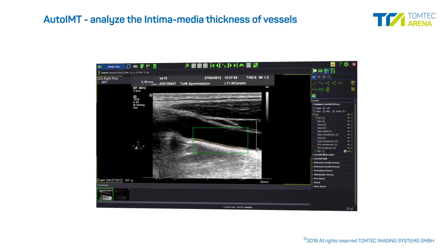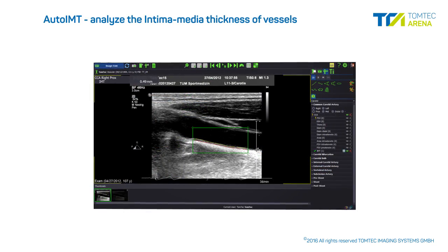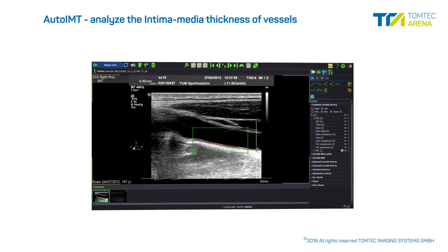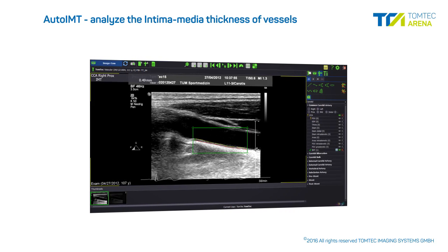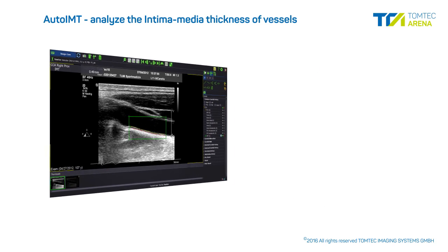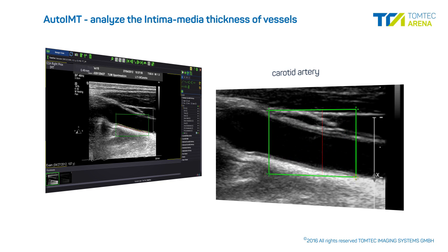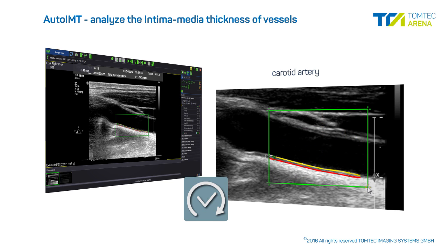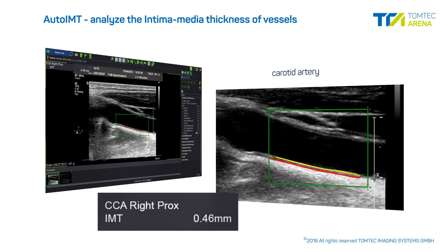AutoIMT is a fast, intuitive, and reliable method to analyze the intima media thickness of vessels such as the carotid artery. By defining a region of interest on a vascular long axis view, AutoIMT automatically calculates the mean intima media thickness. Measurement values are automatically transferred to the measurement worksheet.